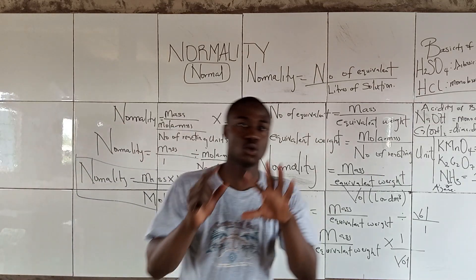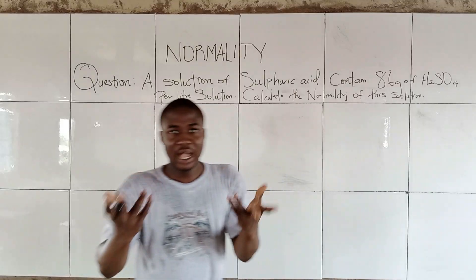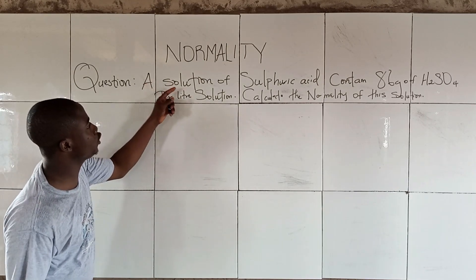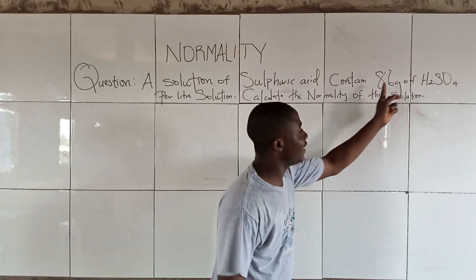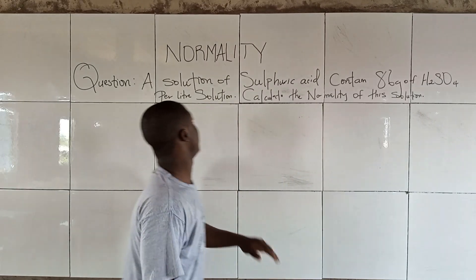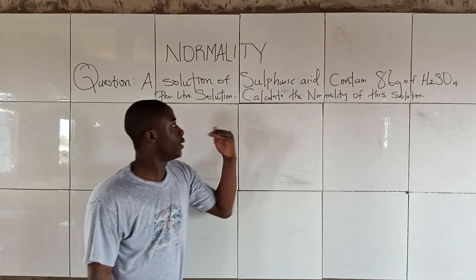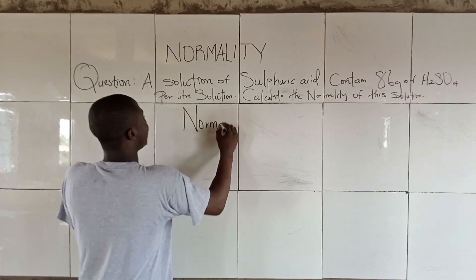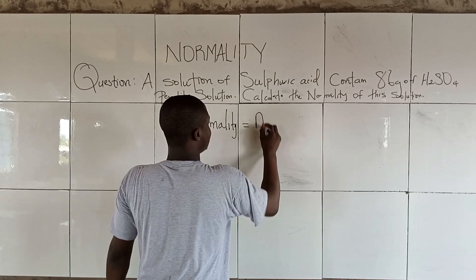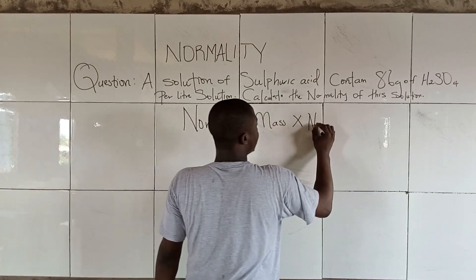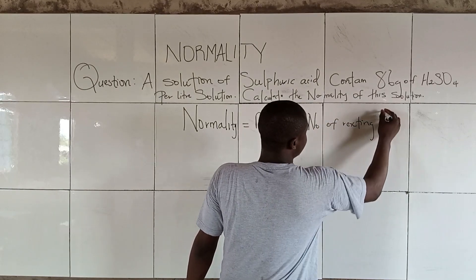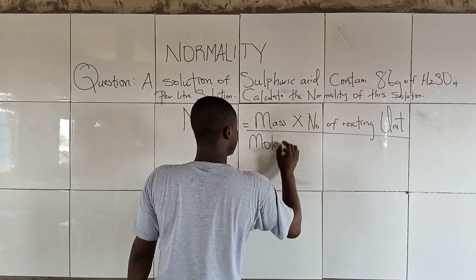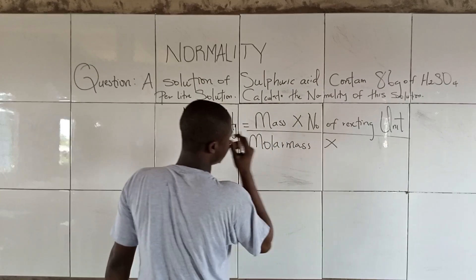Now let's quickly work through a question to understand normality better. The question says: a solution of sulfuric acid contains 86 grams of H₂SO₄ per liter of solution. Calculate the normality of this solution. The formula is: normality equals mass times number of reacting units, over molar mass times volume.